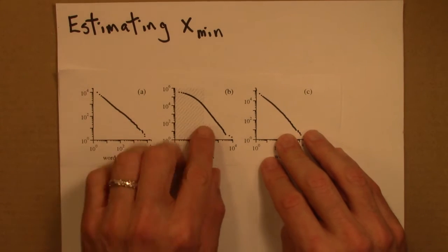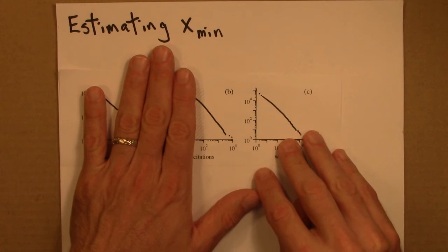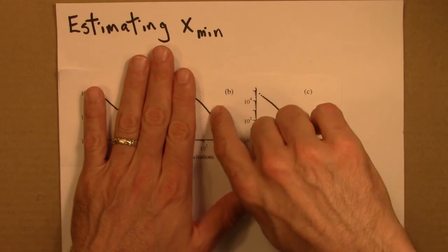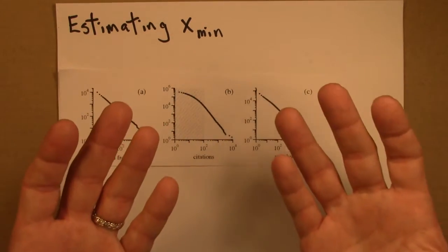On the other hand, you might be tempted to move this way to get more data points, so you'll get a better fit. But you don't want to get so many that you start getting into this curved region. So we're looking for some principled way to perform this tradeoff.